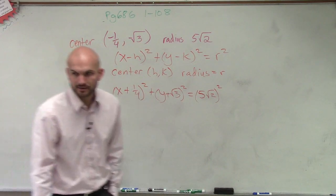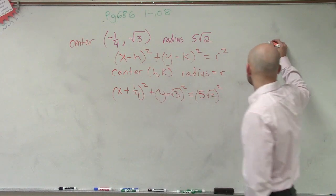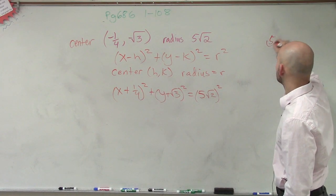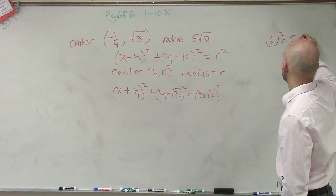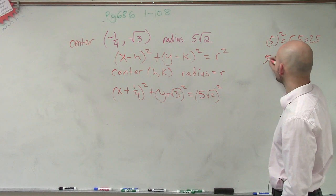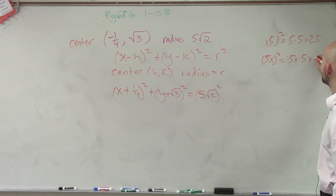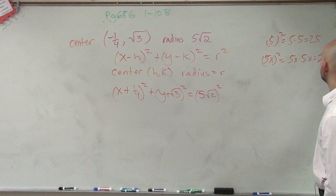And then how do you multiply 5 square root of 2 squared? Well, when we look at this, if we say what is 5 squared, we know that's equal to 5 times 5, which equals 25. If I say what is 5x squared, that is 5 times x times 5 times x, which equals 25x squared.